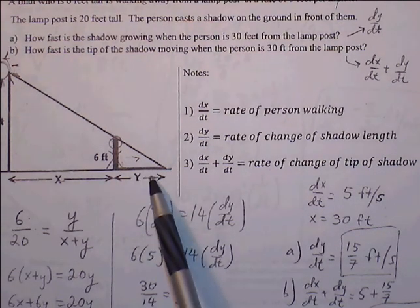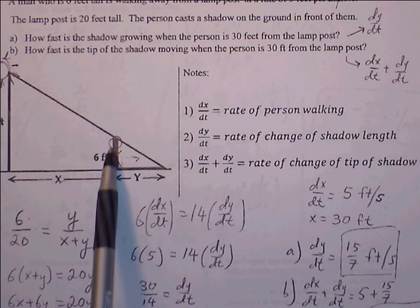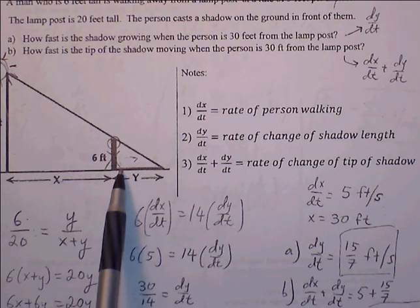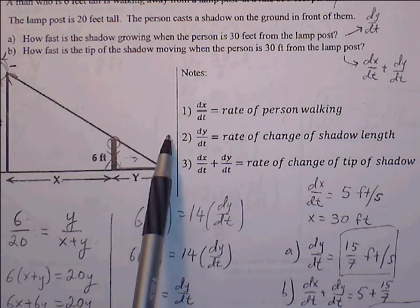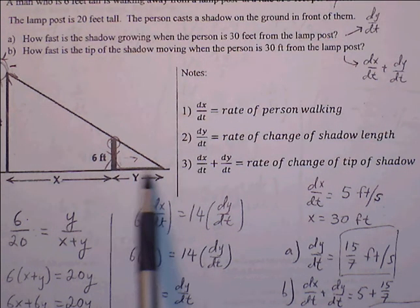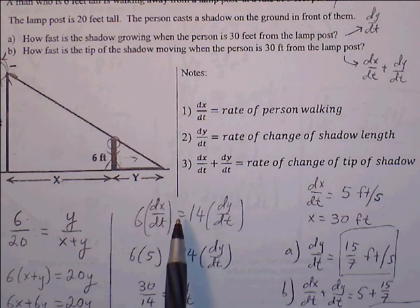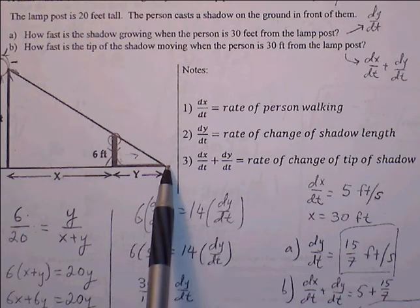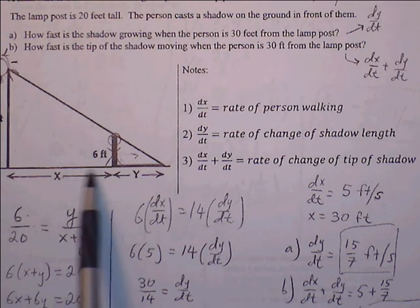With similar triangles we can set up proportions. One way to do this is to say small height is to big height. So this is the height of the small triangle and this is the height of the large triangle. So 6 over 20, as small base is to the base of the large triangle. The small base is y, and the big base is x plus y.